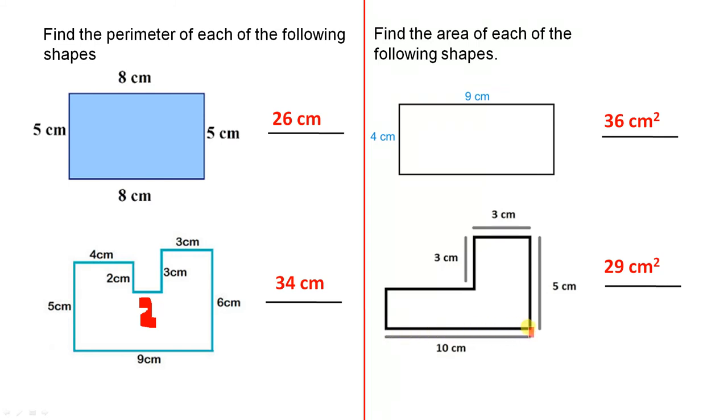Now here, when you're doing the area of this one, notice this total length here is 10 and this length here is 3, therefore this length here is 7. Notice this height here is 5 and that height there is 3, which means that height there is 2.